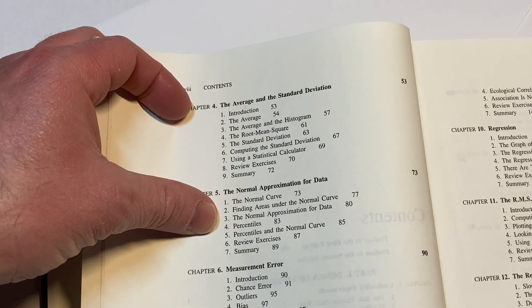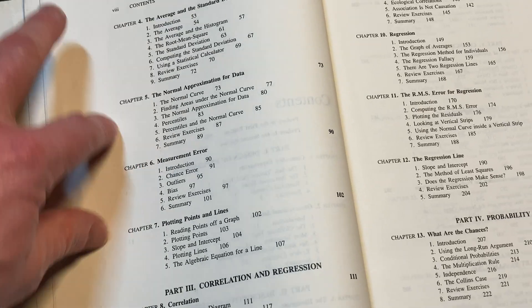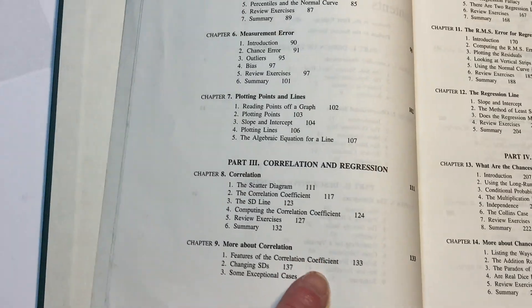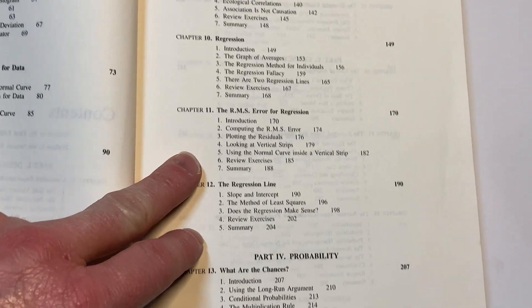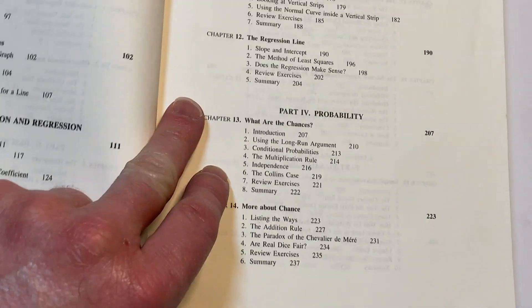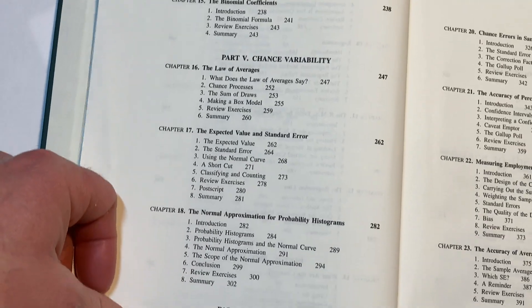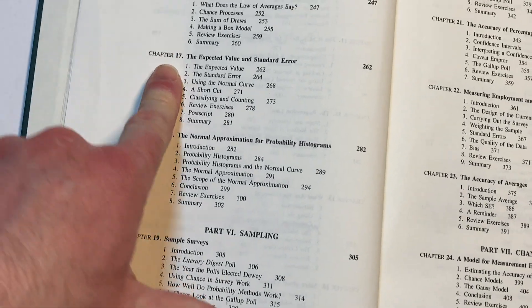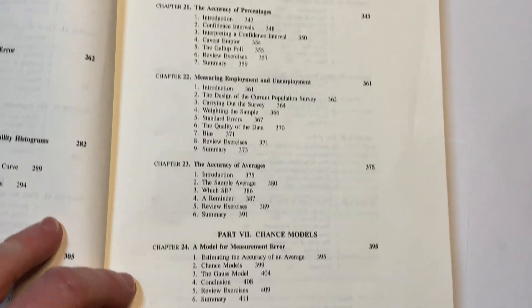The normal approximation for data to get percentiles and stuff. Measurement error, plotting points and lines and correlation and regression. More regression, the RMS error for regression, the regression line. We've got probability. Chance variability, really cool subjects here. The expected value and standard error. Sampling. It's just got a lot of topics and it does an excellent job.